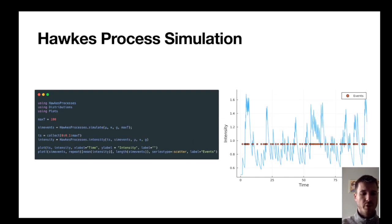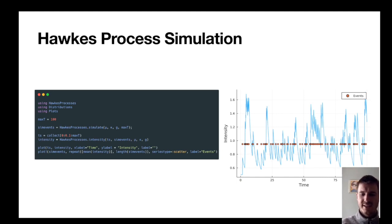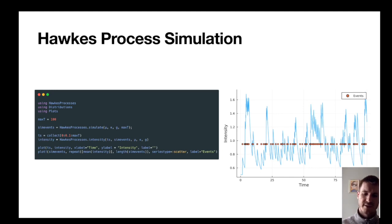If we wanted to simulate a Hawkes process we'd use the same parameters and pass them into the simulate function, and this gives us an array of events indicated here with the red circles. Overlaying the intensity we can see periods of high intensity where there are lots of events and lower intensity where there are fewer events.